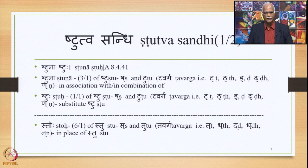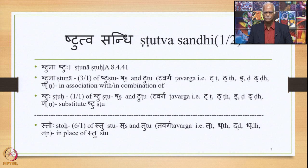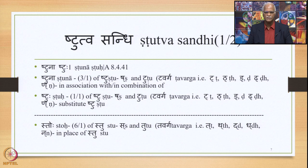Shtuna is instrumental singular of Shtuhu. Shtuhu consists of Sh and Tu. Tu means Tavarga. Tavarga stands for the five consonants: Ta, Tha, Da, Dha, Na. So Shtuna means in association with or in combination of Sh and Tu, that is Tavarga, that is Ta, Tha, Da, Dha, Na.